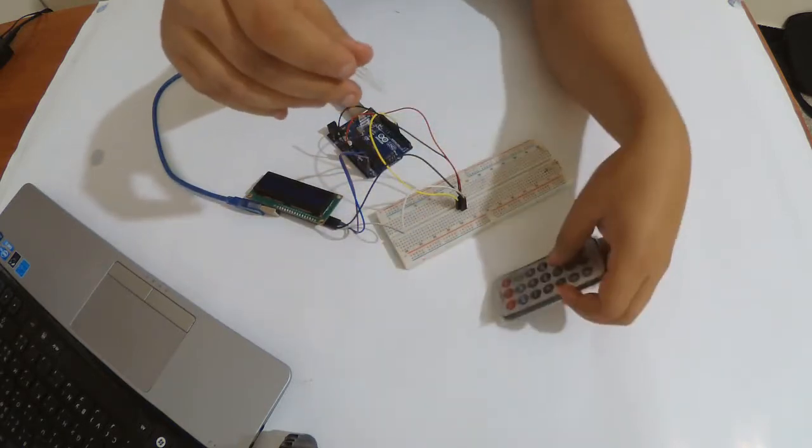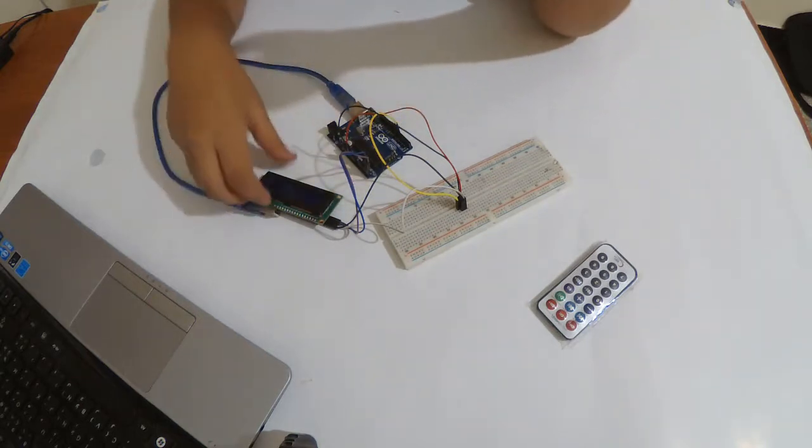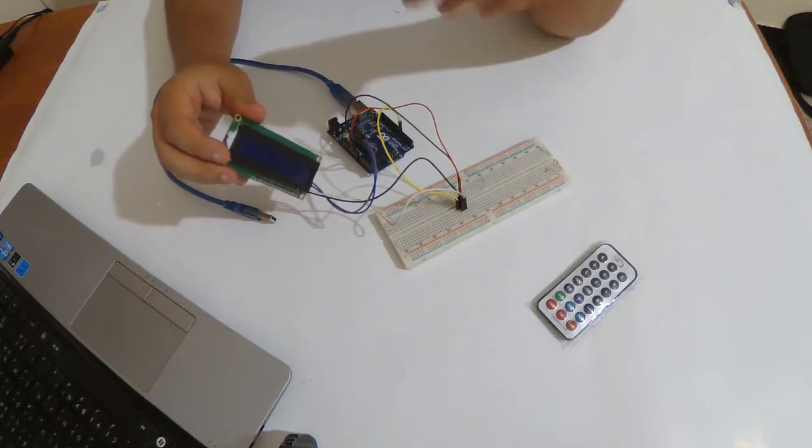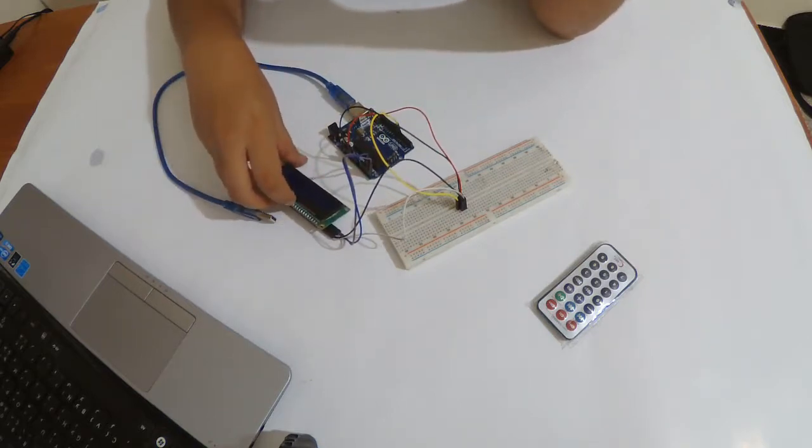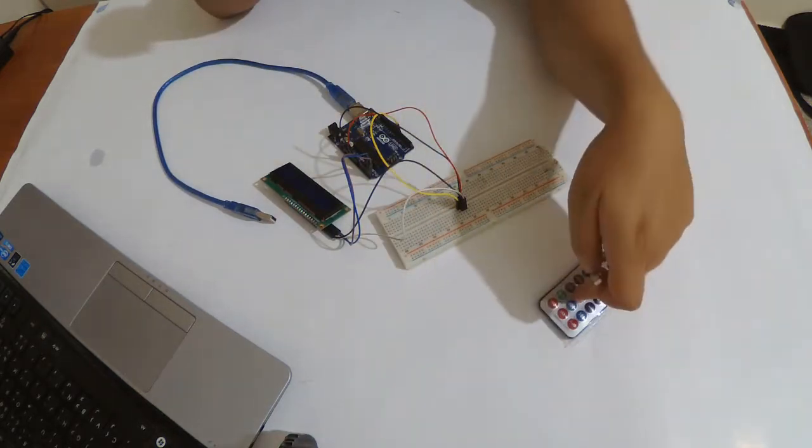We're gonna use this with an LCD display. You can see how to use it in my previous videos. So I'm gonna upload a program in the Arduino Uno that reads the signal from the remote control and shows it on the screen.